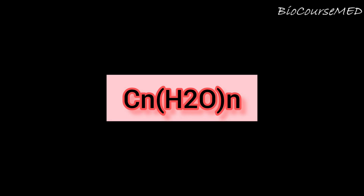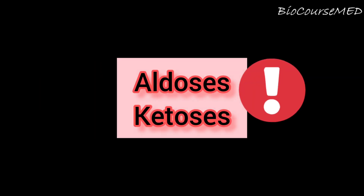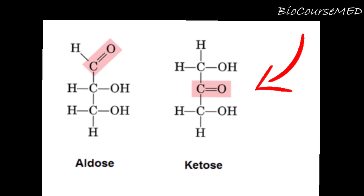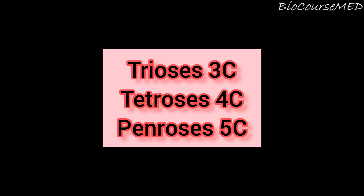Monosaccharides are the simplest group of carbohydrates, often referred to as simple sugars. They have the general formula CₙH₂ₙOₙ and cannot be further hydrolyzed. Monosaccharides are divided into categories based on their functional group and number of carbon atoms. When the functional group is an aldehyde, they are known as aldoses; when the functional group is a keto group, they are referred to as ketoses.